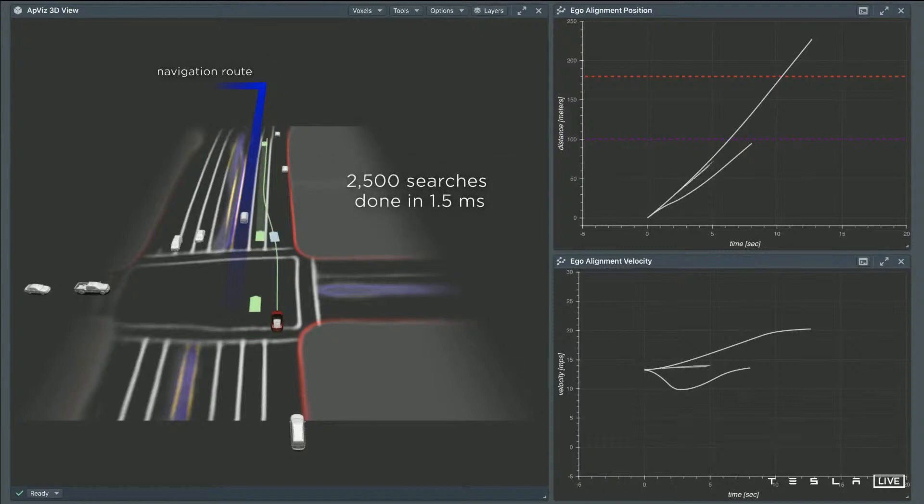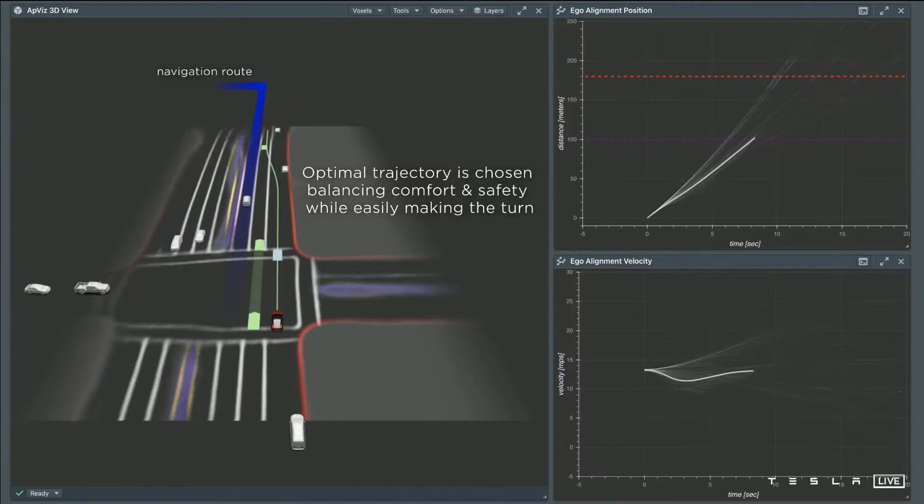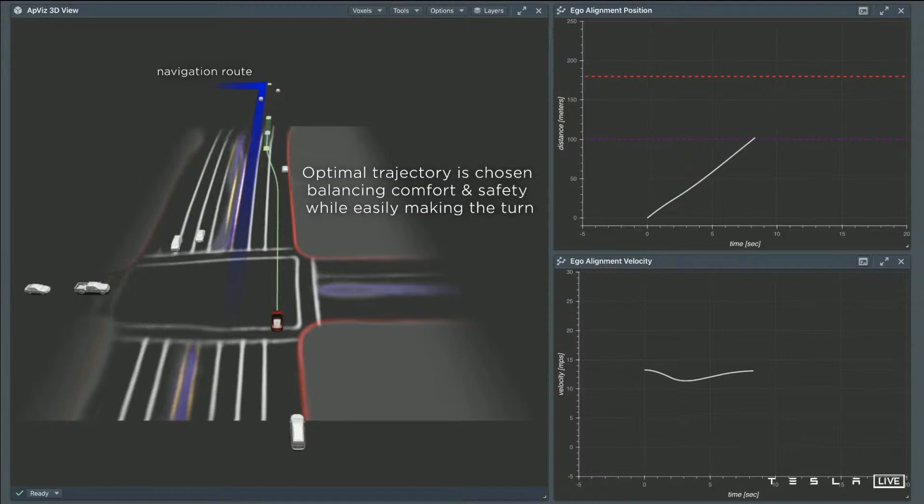We do thousands of such searches in a very short time span. Because these are all physics-based models, these features are very easy to simulate, and in the end we have a set of candidates, and we finally choose one based on the optimality conditions of safety, comfort, and easily making the turn.